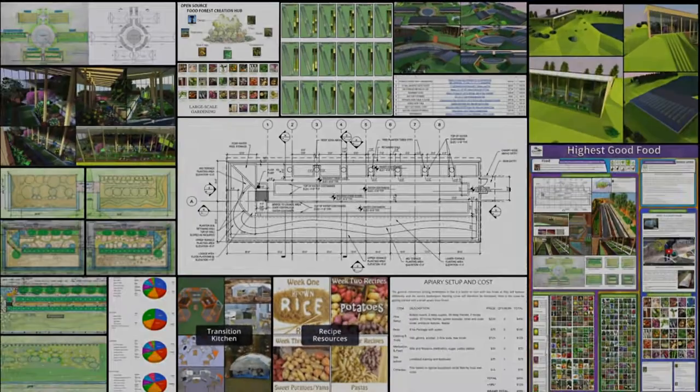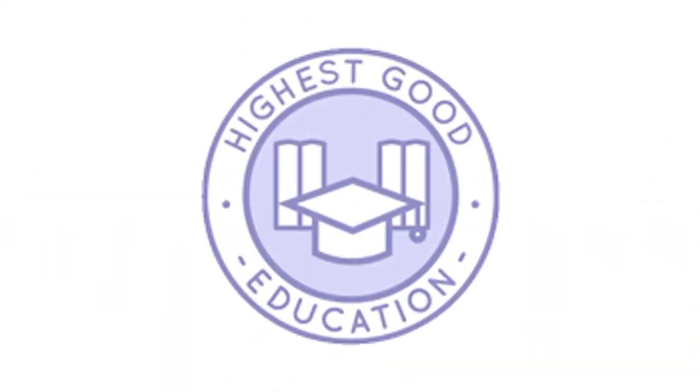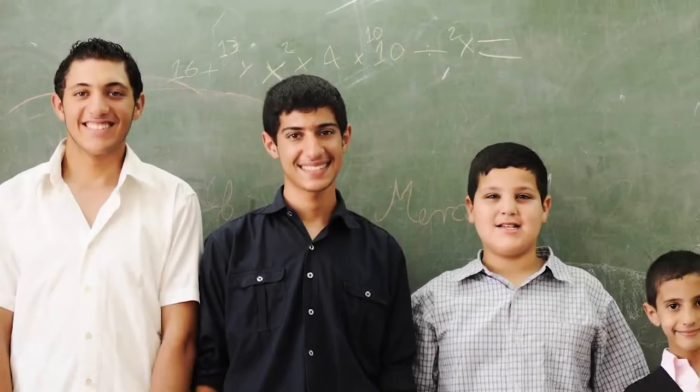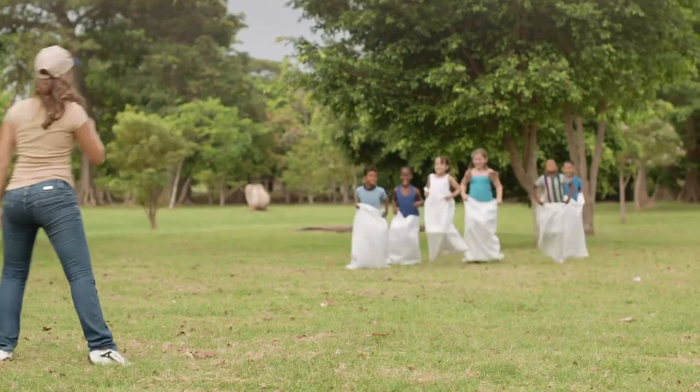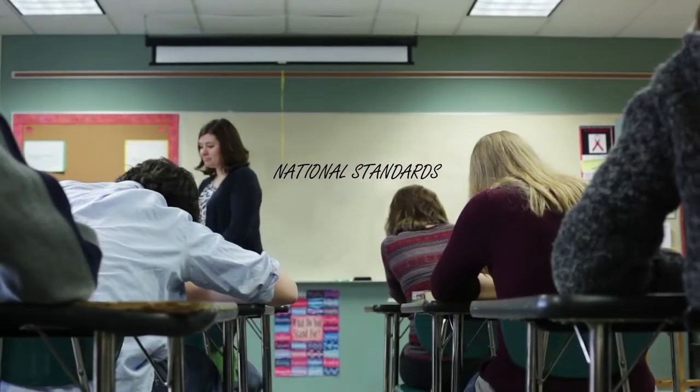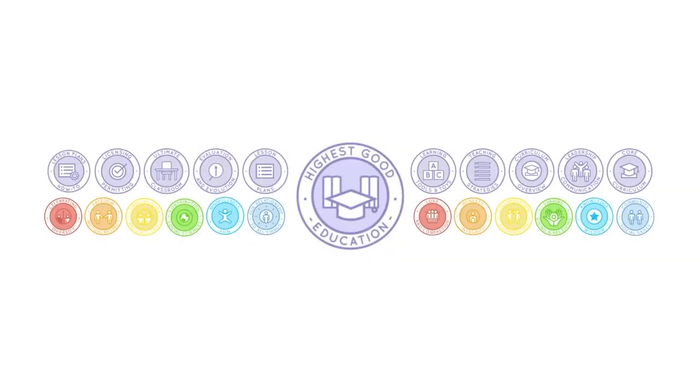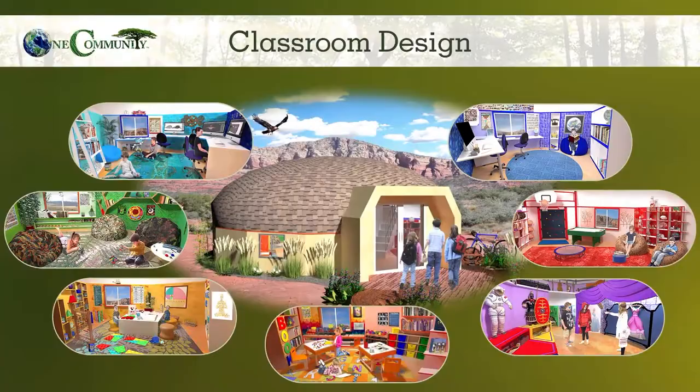The next component is Highest Good Education. This component is complete and pretty much ready to launch once we're on the property. One Community's approach to Highest Good Education is designed for all age groups, adaptable to any schooling environment, inspiring and fun for all participants, and includes national standards, all subjects, lesson plans, teaching strategies, learning strategies and tools, and classroom design.